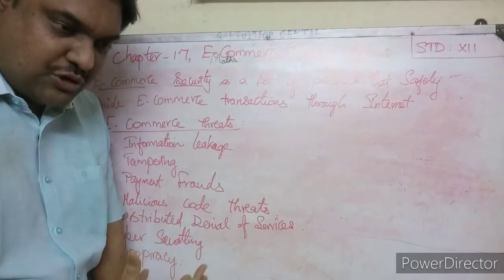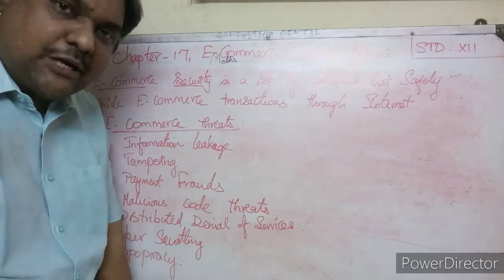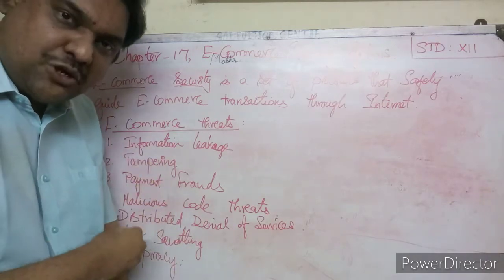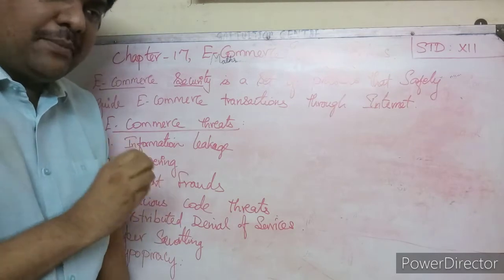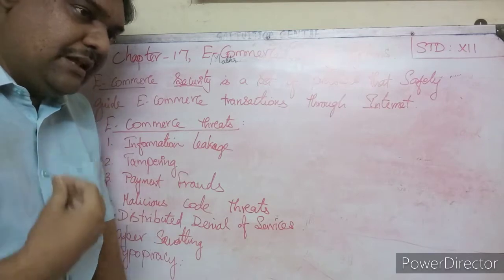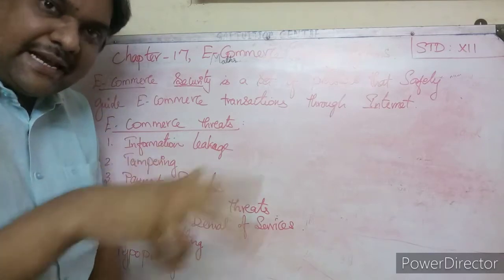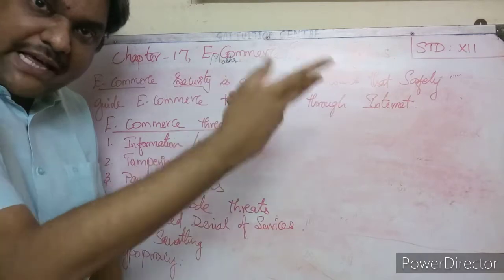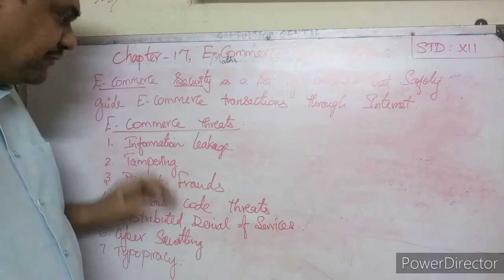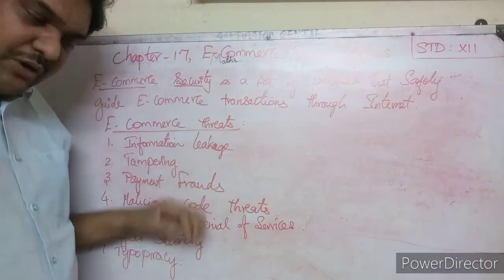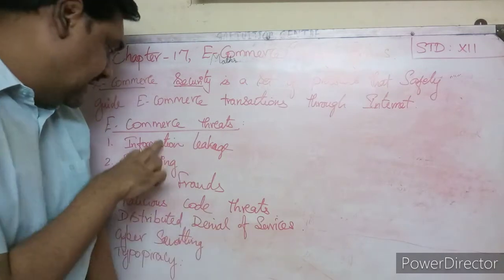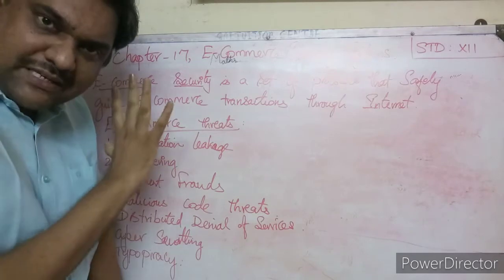Information leakage means that a company's confidential data can be stolen. Hackers can automatically redirect emails or documents to the wrong party. This stealing of official documents involved in e-commerce transactions is called information leakage — the first e-commerce threat.